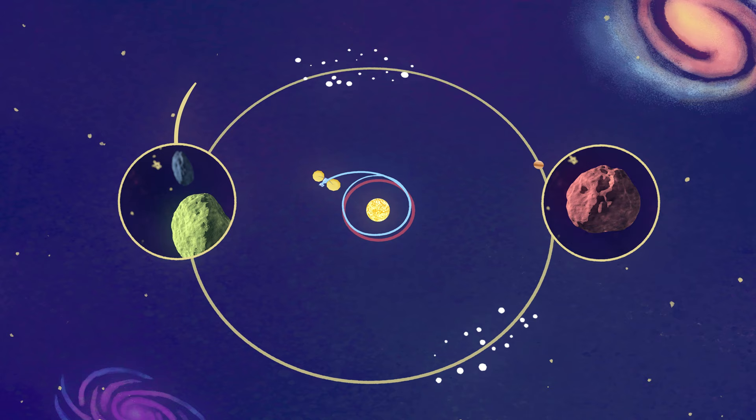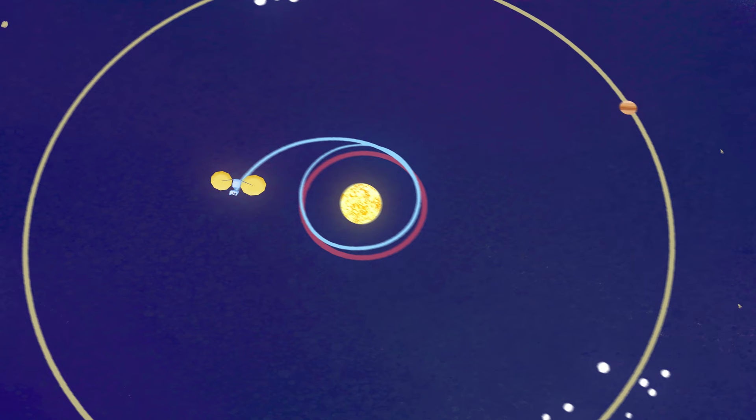These are a population of asteroids in orbit around the Sun, about as far away as Jupiter.